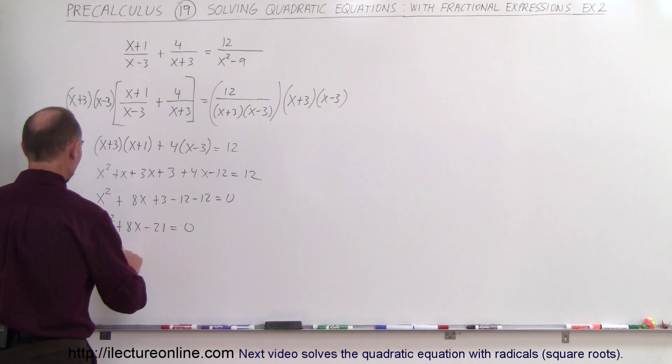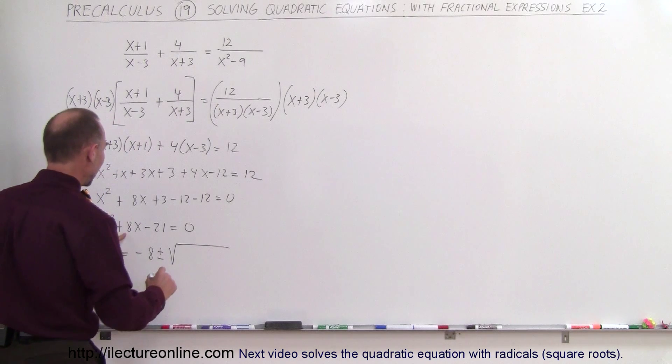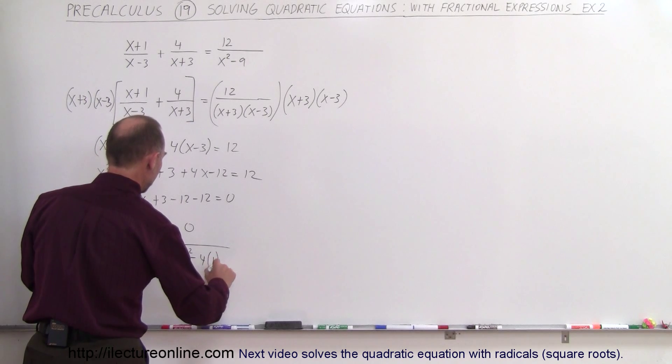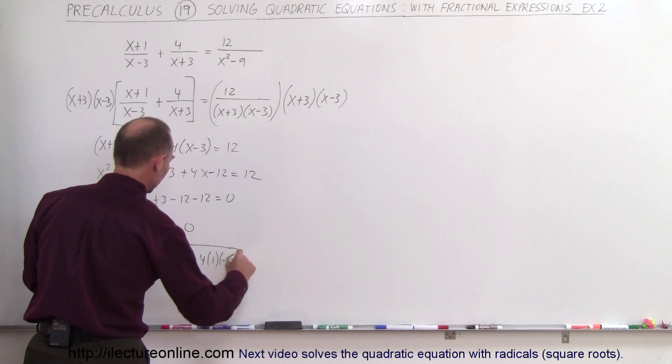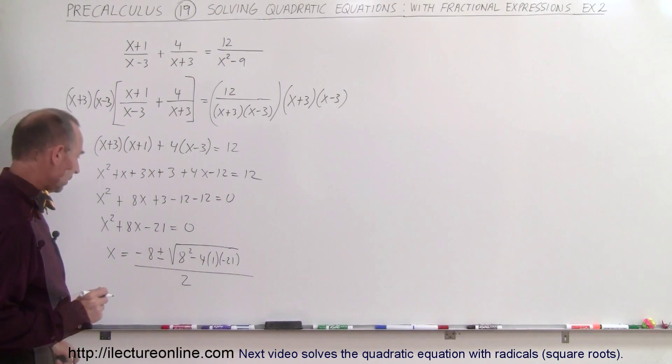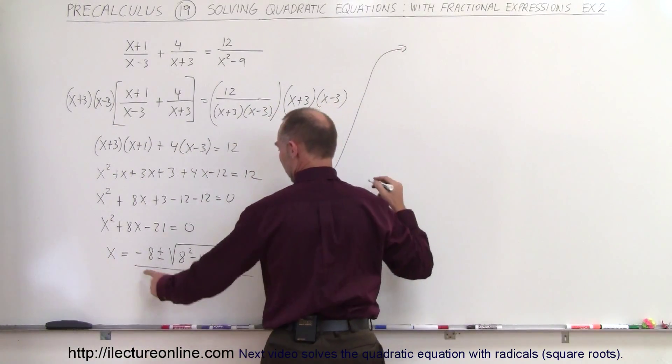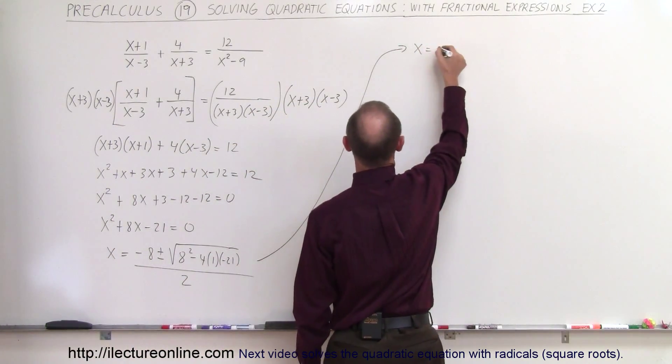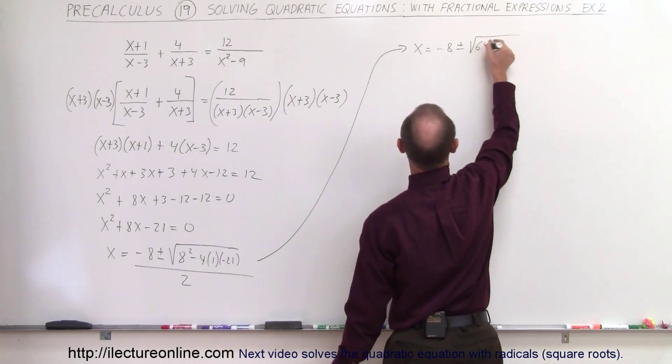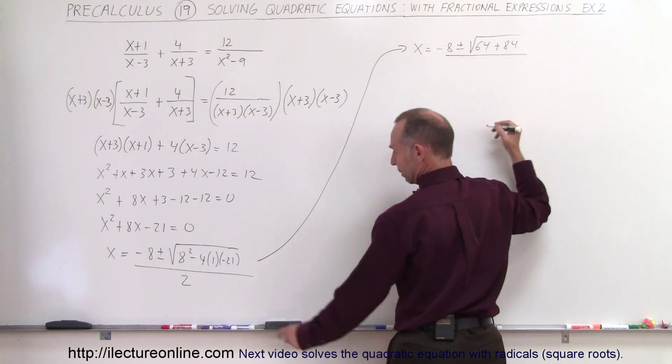So we can write that x is equal to minus 8 plus or minus the square root of 8 squared minus 4 times a times c, which is minus 21, all divided by 2a, which is 2. Let's clean this up a little bit. So we have x is equal to minus 8 plus or minus the square root of, so we have 64, and the minus times the minus gives me a plus 84, all divided by 2.